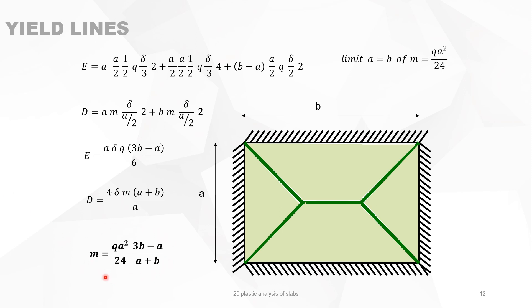Let's verify the formula makes sense. If B equals A (square slab), we get M equals qA squared over 24, which matches the previous result. When B is much larger than A and we take the limit, the formula gives M equals qA squared over 8 — exactly the formula for one-way slabs. So the formula correctly describes the transition between one-way and two-way slab behavior.